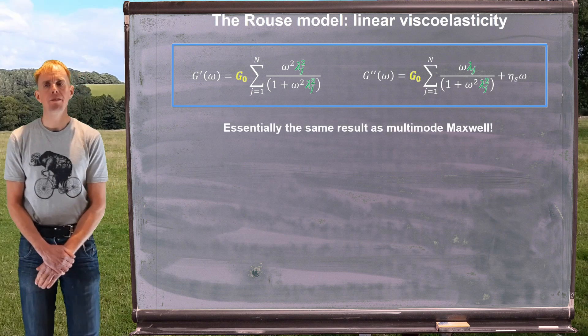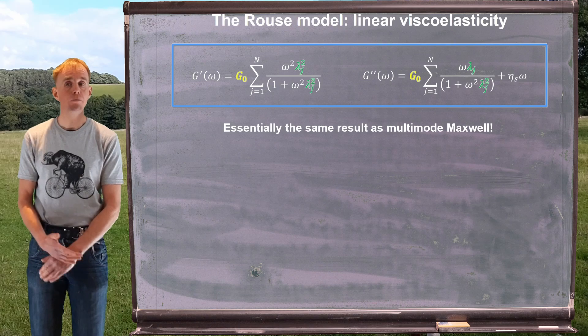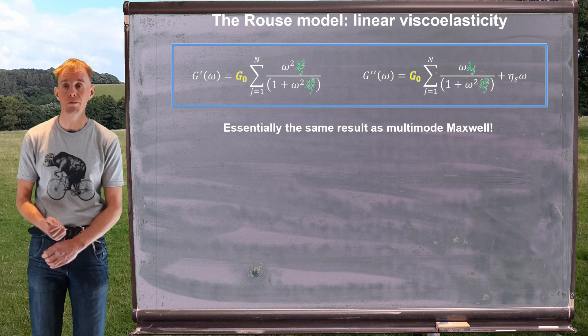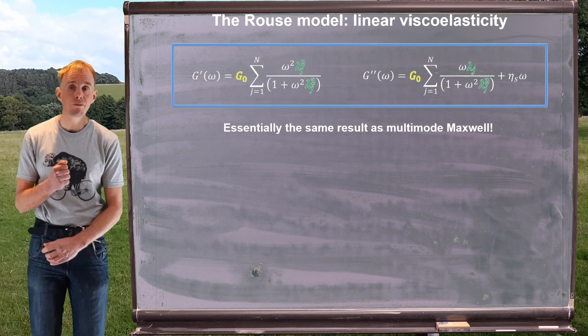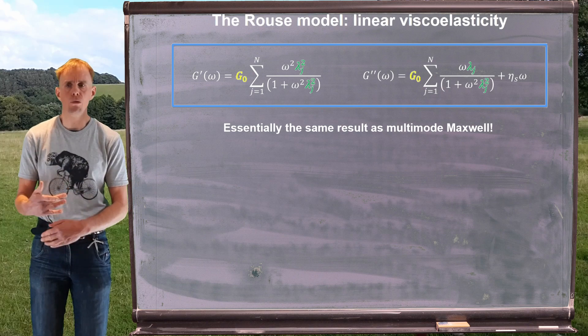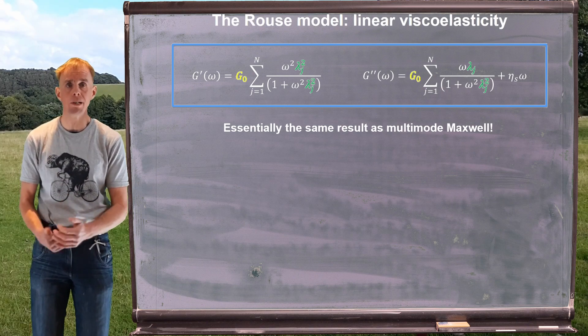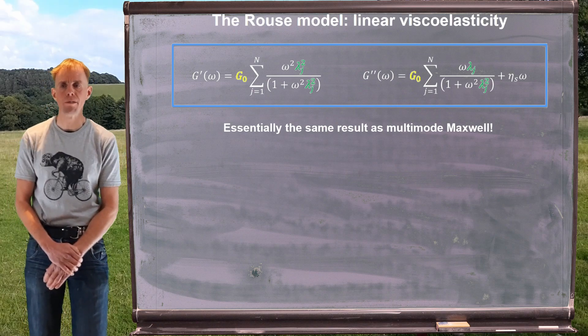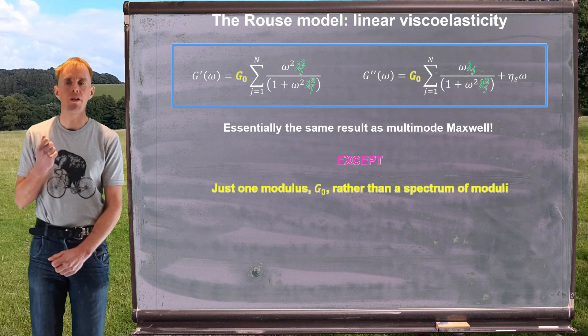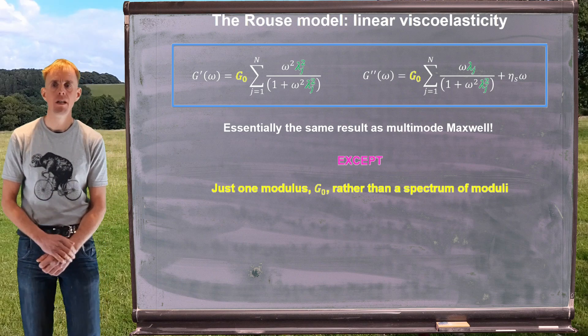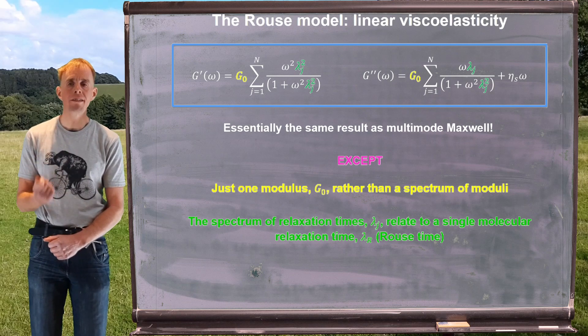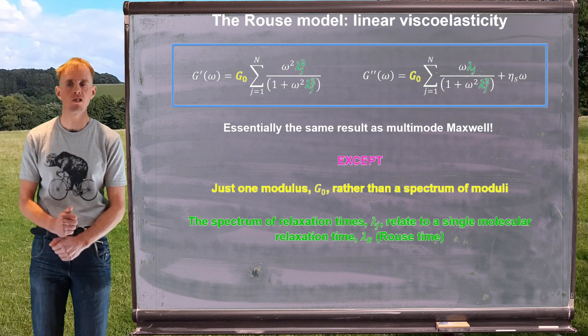If you're thinking that these equations look a little bit familiar, it's because they should. The Rouse model is effectively a very similar result to multimode Maxwell with a couple of caveats. Firstly, in the viscous modulus, we get the inclusion of the solvent viscosity now, whereas with multimode Maxwell, we had no concept of the fact that we had a solvent present. What we also find is there's now just one modulus, G₀, rather than a spectrum of moduli, G_i, and the spectrum of relaxation times, λ_j, can be all related back to one single molecular relaxation time, the Rouse time.